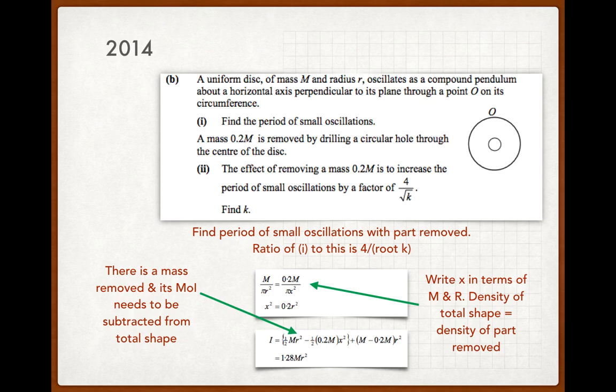Okay, just to finish it off, then we're wondering what the effect of removing a mass of 0.2m is to increase the period of small oscillations by a factor of 4 over k. Find k. So you take part one, the period of small oscillations, you'd use the moment of inertia of 1.28mr². At the end, get the period of small oscillations after the part is removed, put one over the other, and you'd get an equation that looks like 4 over the square root of something, and you're just looking for that something.